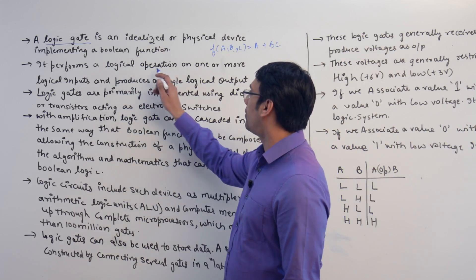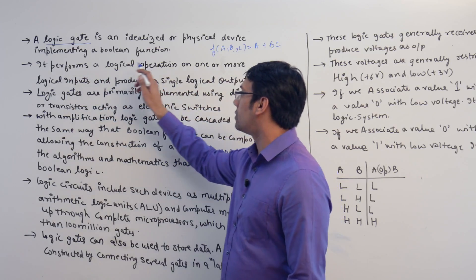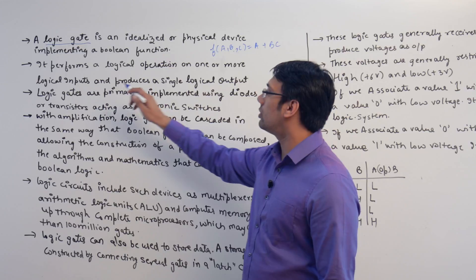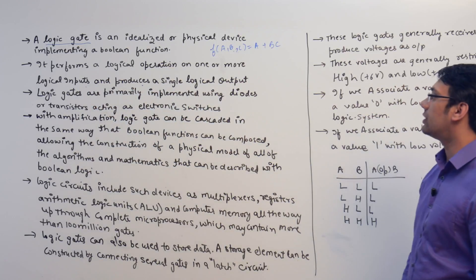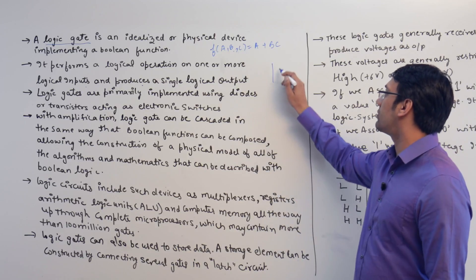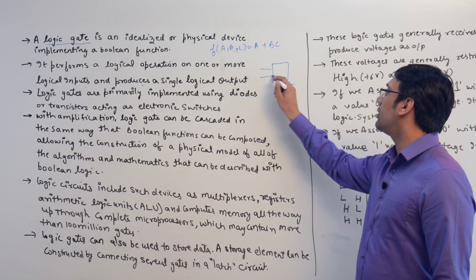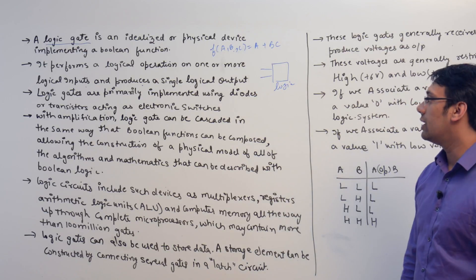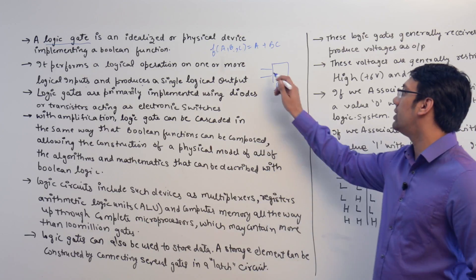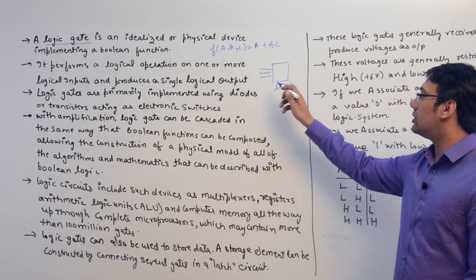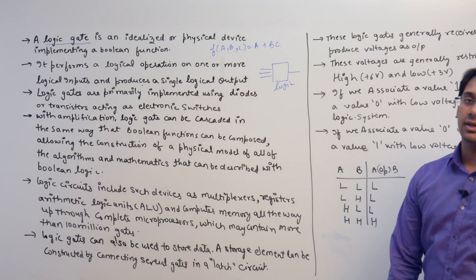A logic gate performs a logic operation on one or more logical inputs and produces a single logical output. A logic gate takes one or more inputs — some gates take one input, some take two inputs, some take three inputs — and produces a single output.